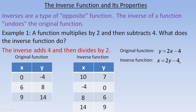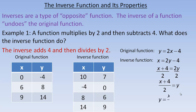To solve for y in x = 2y - 4, I'll add 4 to both sides: x + 4 = 2y. Then divide both sides by 2, and the 2's cancel, leaving y = (x + 4) / 2. So the inverse adds 4 and then divides by 2, which matches the inverse operations we identified earlier.